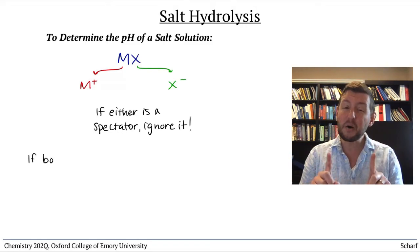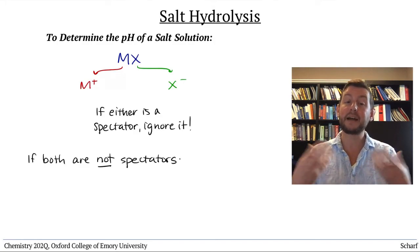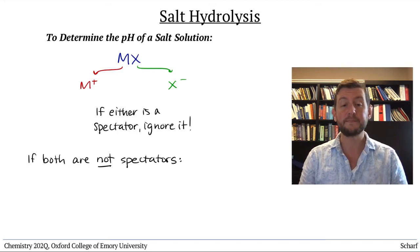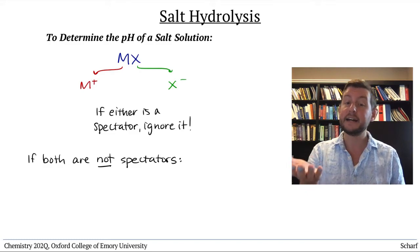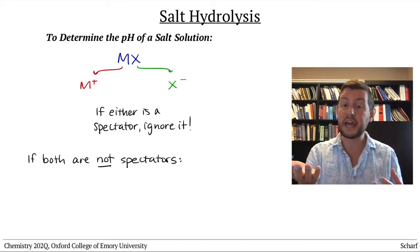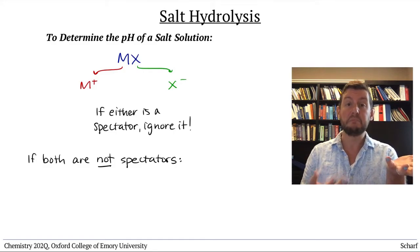If both the cation and anion can impact the pH, the situation gets a little trickier. We need to compare the strengths of the cation as an acid, its Ka, with the strength of the anion as a base, its Kb.